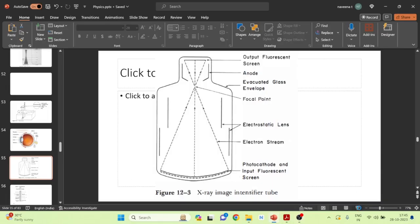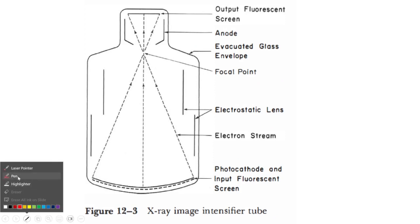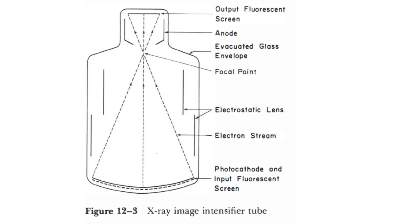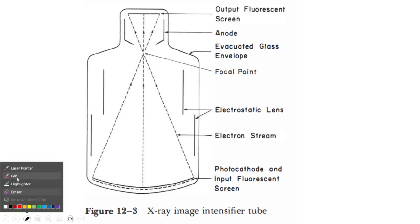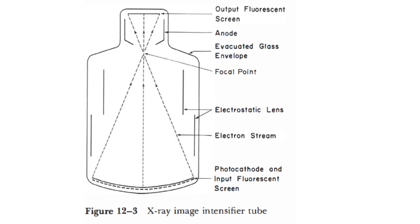Let us learn some important points about the image intensifier tube. This is a picture of an image intensifier tube. It is made up of an evacuated glass envelope. There are four important parts: the input phosphor and photocathode, electrostatic focusing lenses, an accelerating anode, and an output phosphor. When the X-ray beam passes through the patient, it enters the image intensifier tube.